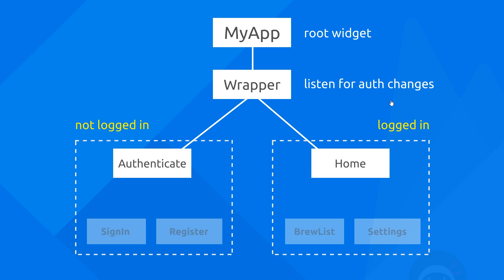Now that we have our auth service class set up, we can go ahead and use it to log in anonymously inside our app. We want to do that from the sign-in widget, which is going to sit beneath the authenticate widget. In this lesson we're going to create this sign-in widget so that we can use the auth service inside it to log in.